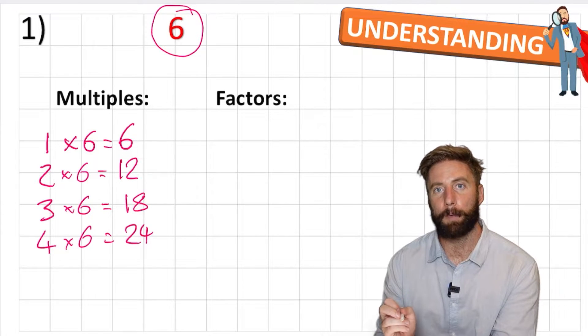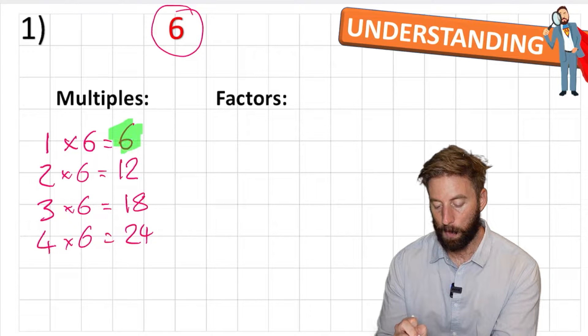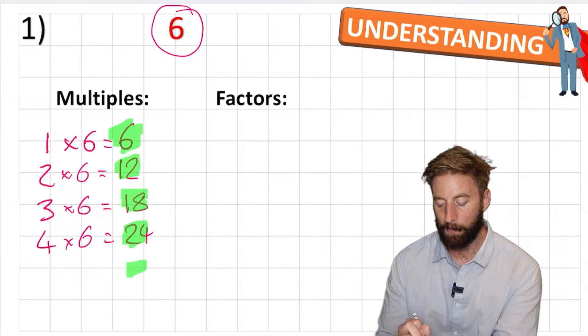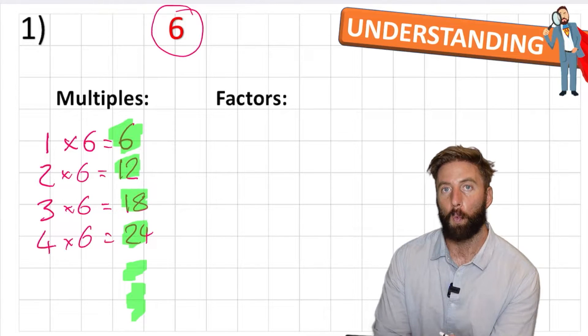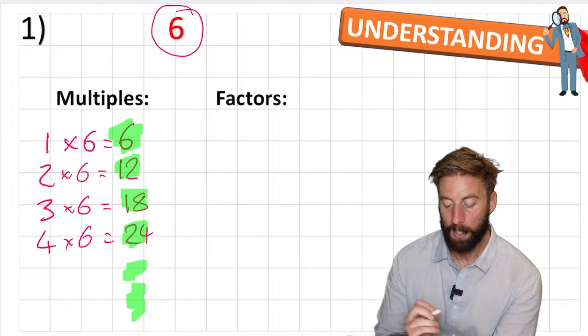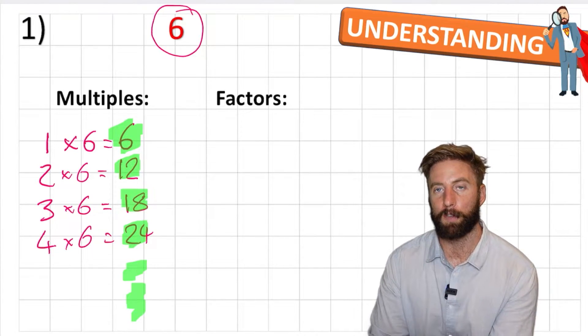So all of these numbers here are 6, 12, 18, 24 and every other number that would come after this when multiplying by other integers are all multiples of 6.